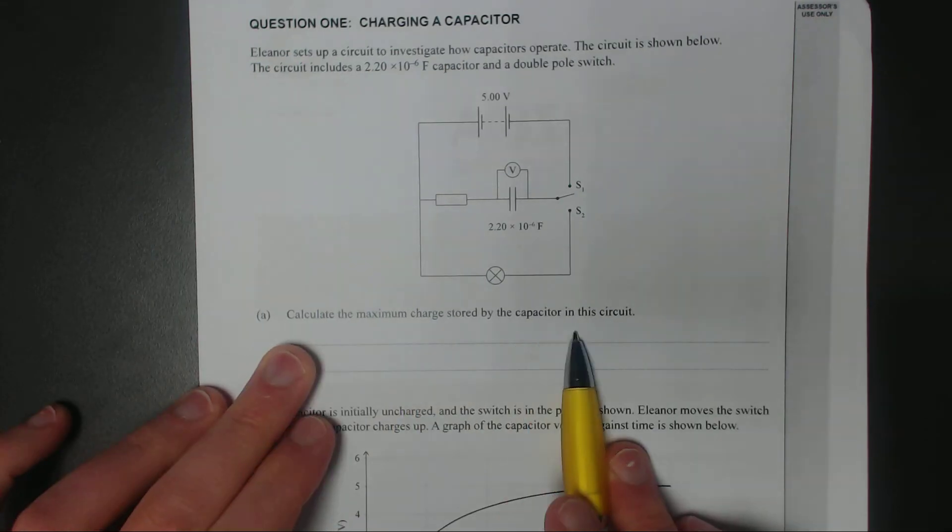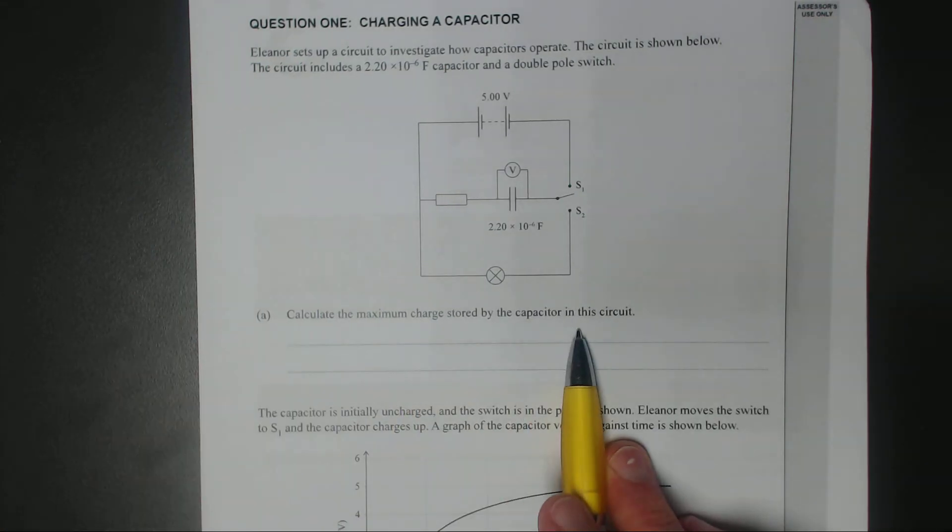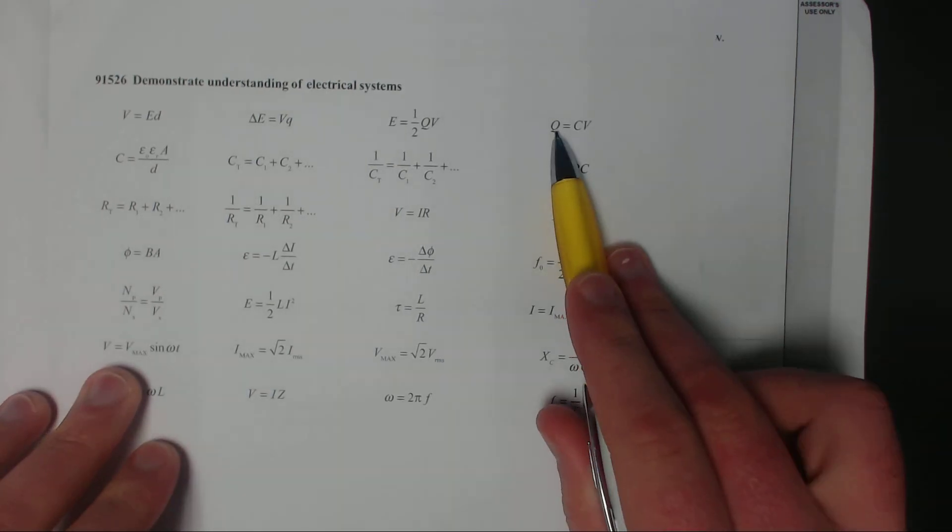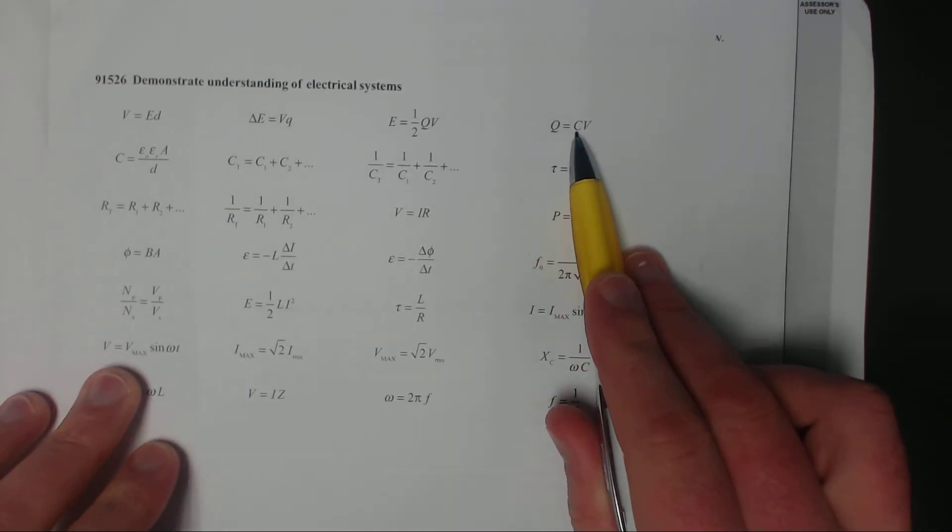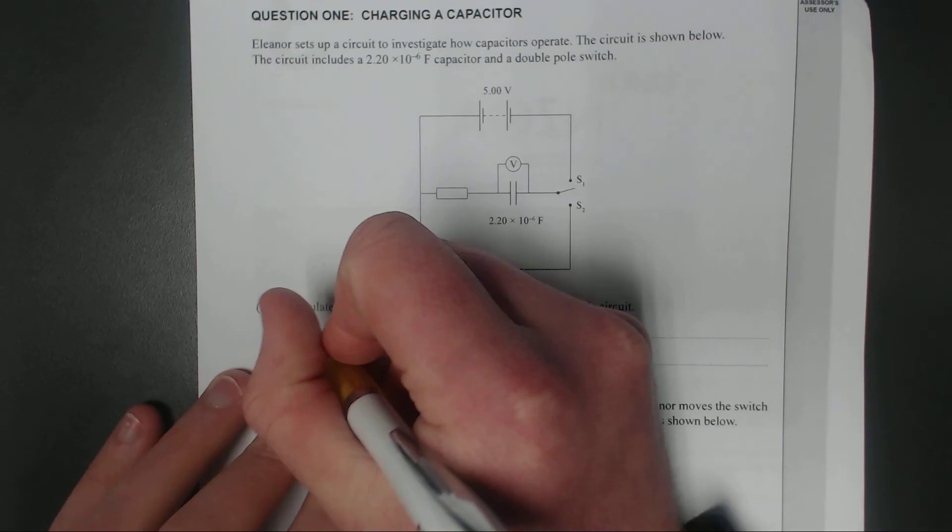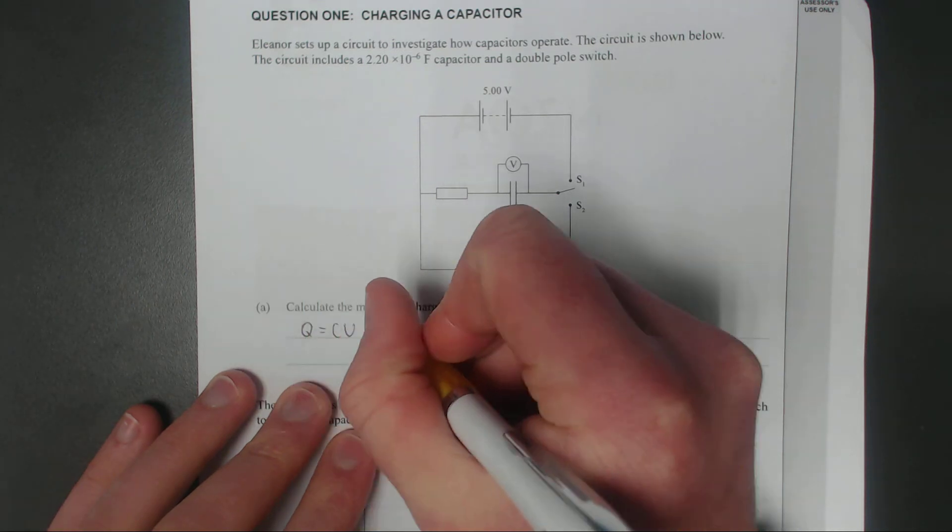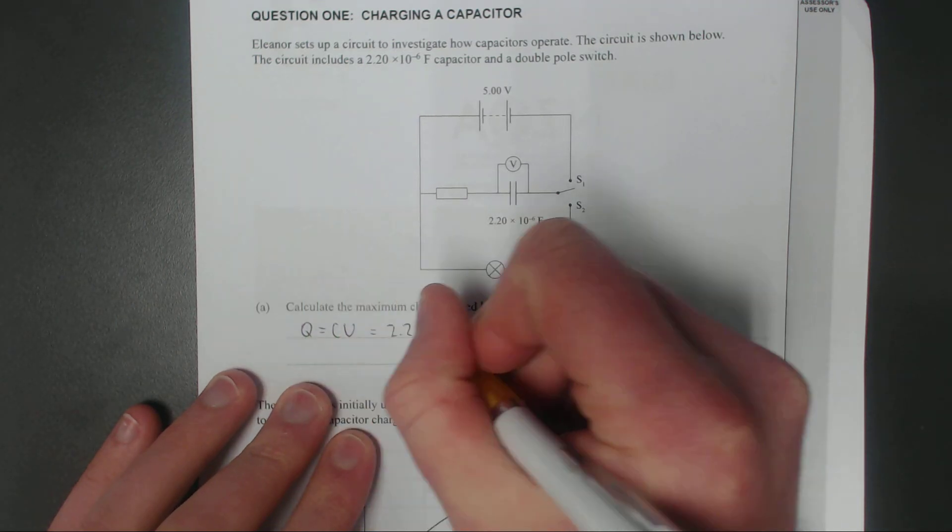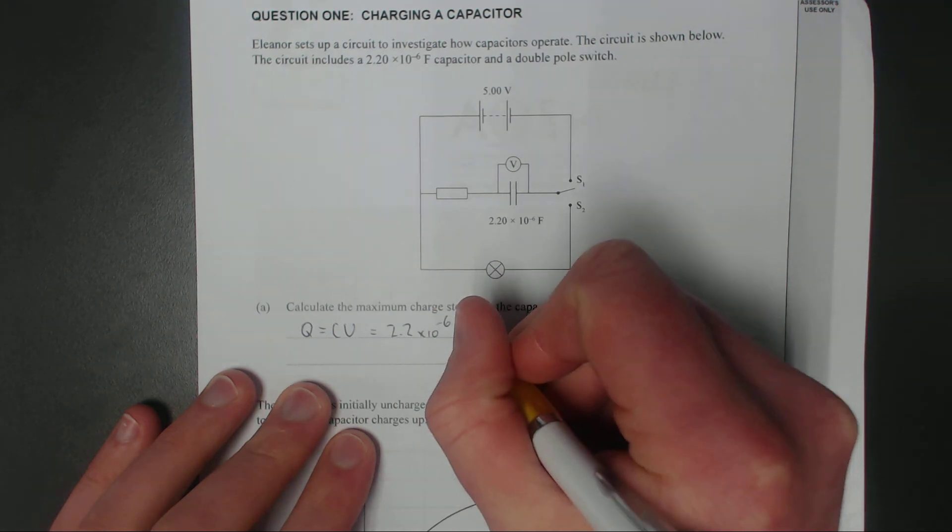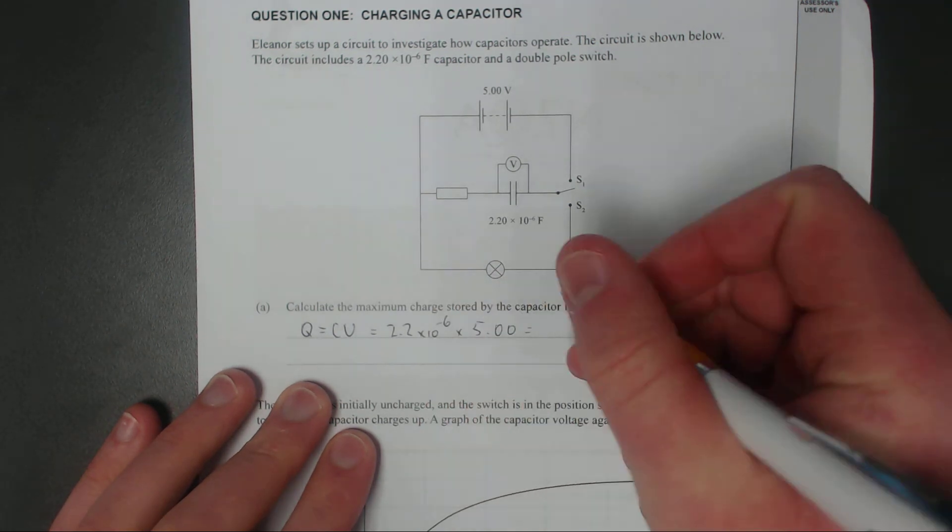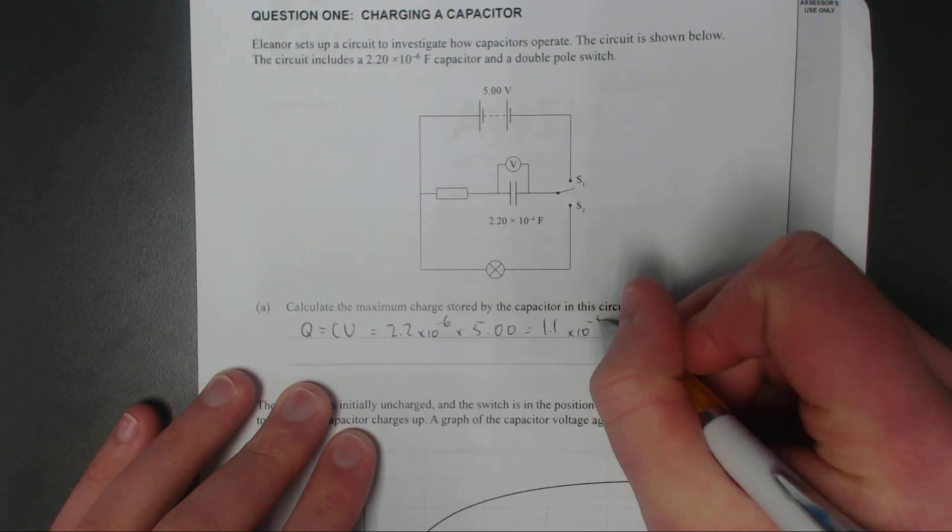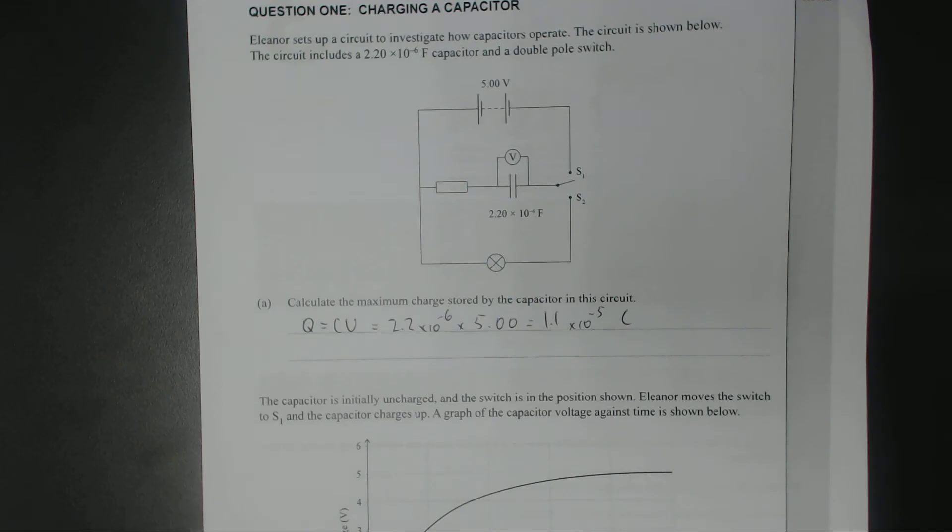Calculate the maximum charge stored by the capacitor. So if you jump onto your formula sheet, you should have charge Q, measured in coulombs, is equal to the capacitance times the voltage. So it's just a simple matter of Q equals CV which is equal to 2.2 times 10 to the minus 6, that's microfarads, times 5 volts which is equal to 1.1 times 10 to the negative 5 coulombs.